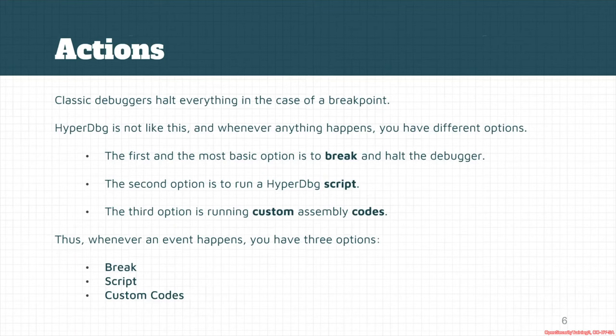Classic debuggers like WinDbg and other debuggers — whenever a breakpoint happens, the entire system is halted and waiting for a command. This is also true about HyperDbg. HyperDbg has an action called break, and it halts everything. The second option is S-Script. This is a powerful option I will explain. And the third option is running custom assembly codes. So we have three basic actions: break, S-Script, and custom codes.